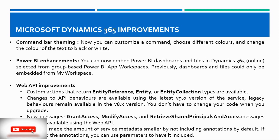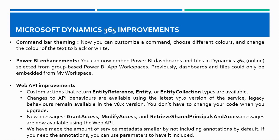Web API improvements have also been made. Custom actions that return entity reference, entity, or entity collection types are now available as output parameters. Changes to API behaviors are available using version 9.0 of the service, while legacy behaviors remain in version 8.0 — you do not need to change your code when you upgrade. New messages such as Grant Access, Modify Access, and Retrieve Shared Principals are now supported via the web API. The amount of service metadata has also been reduced by not including annotations by default; you can use a parameter to include them if needed.